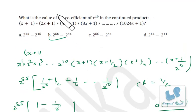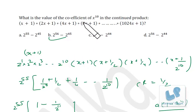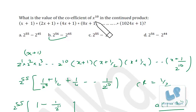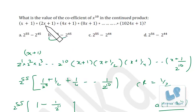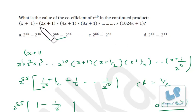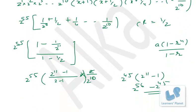So the coefficient of x^10 is 2^56 − 2^45. The key aspect here is that in an 11th degree equation, the coefficient of x^10 equals the sum of the roots with a negative sign. But before applying that, make sure to take the existing coefficient of x as common so that the coefficient of x is 1.